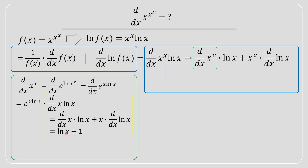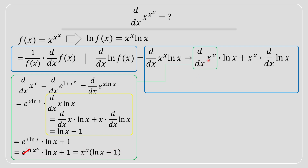Once you apply that product rule, the derivative of x·ln(x) equals ln(x) + 1. So the derivative of x^x is e^(x·ln(x)) times (ln(x) + 1). We can then move the x back into the exponent: e^(ln(x^x)) cancels to x^x, leaving us with x^x · (ln(x) + 1) as the derivative of x^x.